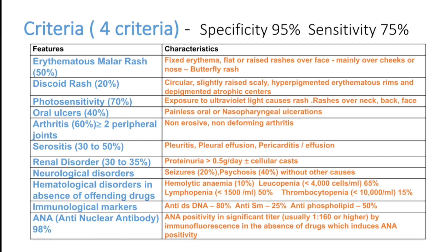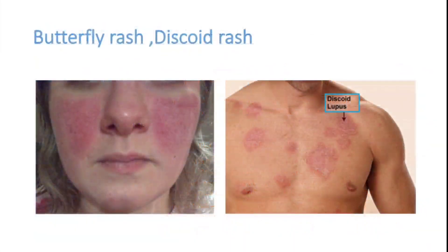The specificity is 95% and sensitivity is 75%. Patients can present with butterfly rash on the face — a classical feature — and discoid rash on the chest. Remember, the disease is more common in females. In male patients the disease is very rare, but SLE in males tends to be more dangerous.